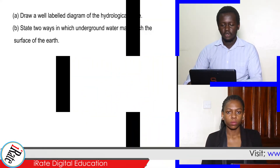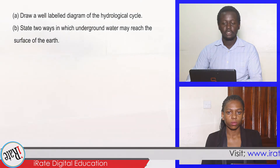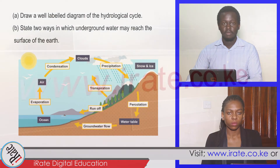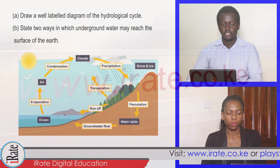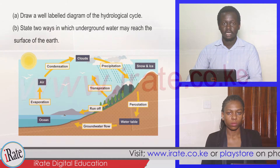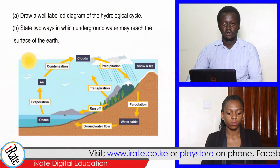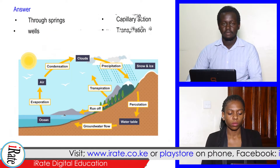A. Draw a well-labeled diagram of the hydrological cycle. B. State two ways in which underground water may reach the surface of the earth.